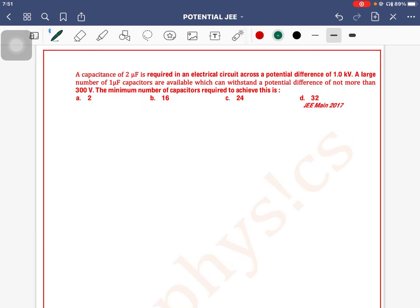A capacitance of 2 microfarad is required in an electrical circuit across a potential difference of 1 kilovolt. A large number of 1 microfarad capacitors are available which can withstand a potential difference of not more than 300 volts. The minimum number of capacitors required to achieve this is?